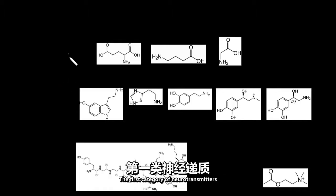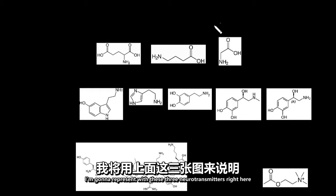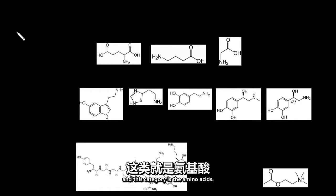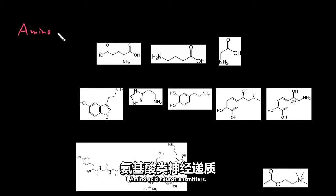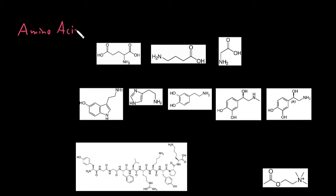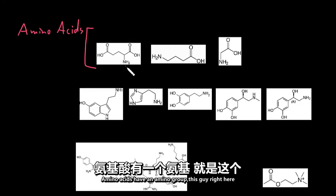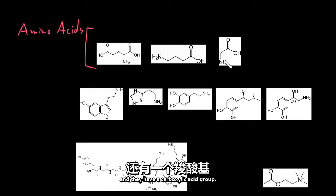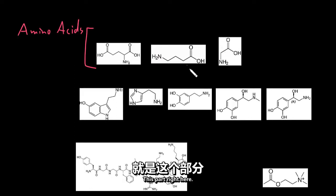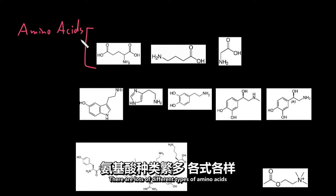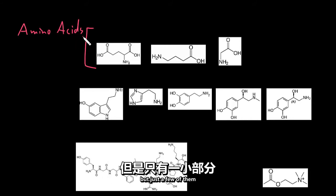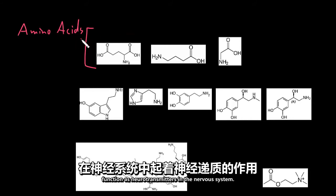The first category of neurotransmitters is the amino acids. Amino acids have an amino group and a carboxylic acid group, and there are lots of different types of amino acids, but just a few of them function as neurotransmitters in the nervous system.